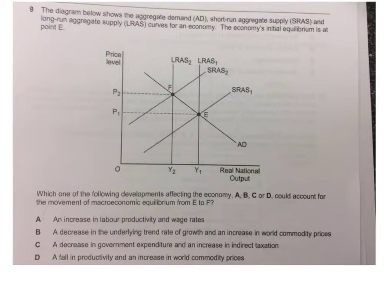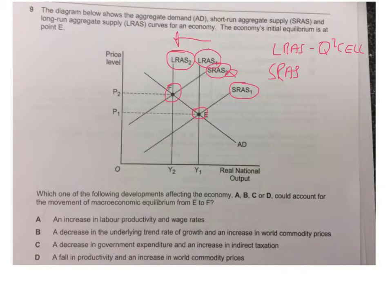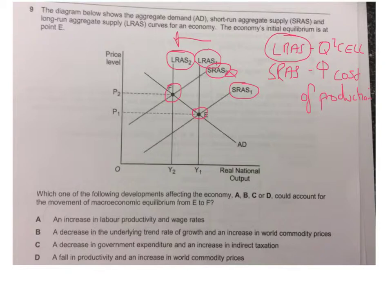This question is trying to scare you because as you can see there's a short-run aggregate supply, a long-run aggregate supply shift, and an AD line. What it's asking you to do is go from point E to point F. For it to go from point E to point F, LRAS would have to shift to LRAS2 and SRAS would have to shift to SRAS2. So both LRAS and SRAS are going down. Anything that would cause LRAS to go down would be a change in Q-squared-cell, and anything that would cause SRAS to go down would be anything that increases a firm's cost of production. Not often do you see LRAS going down — normally it represents the economy getting bigger, but something must have happened to make it smaller.